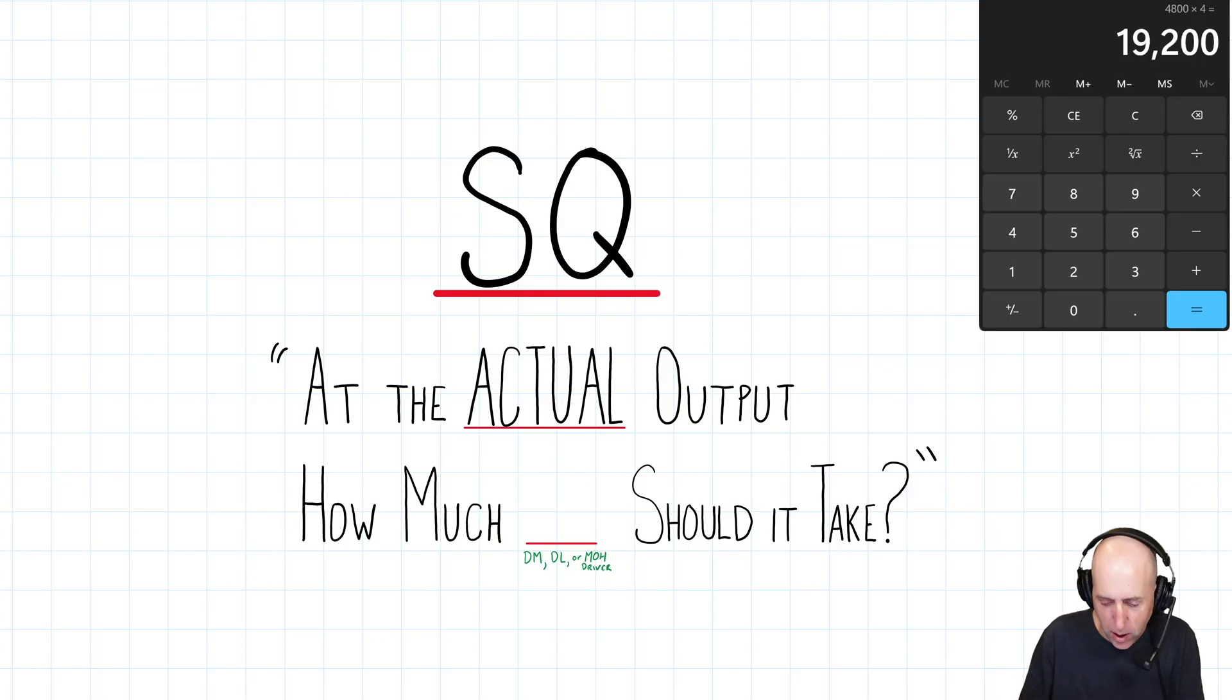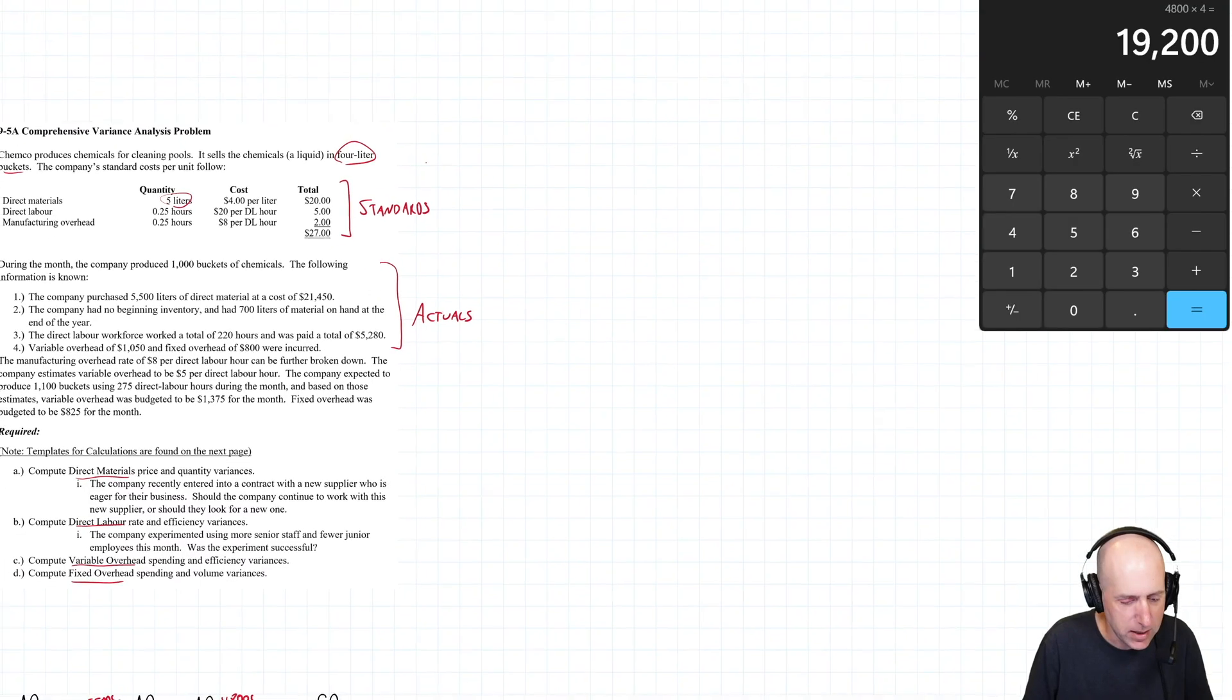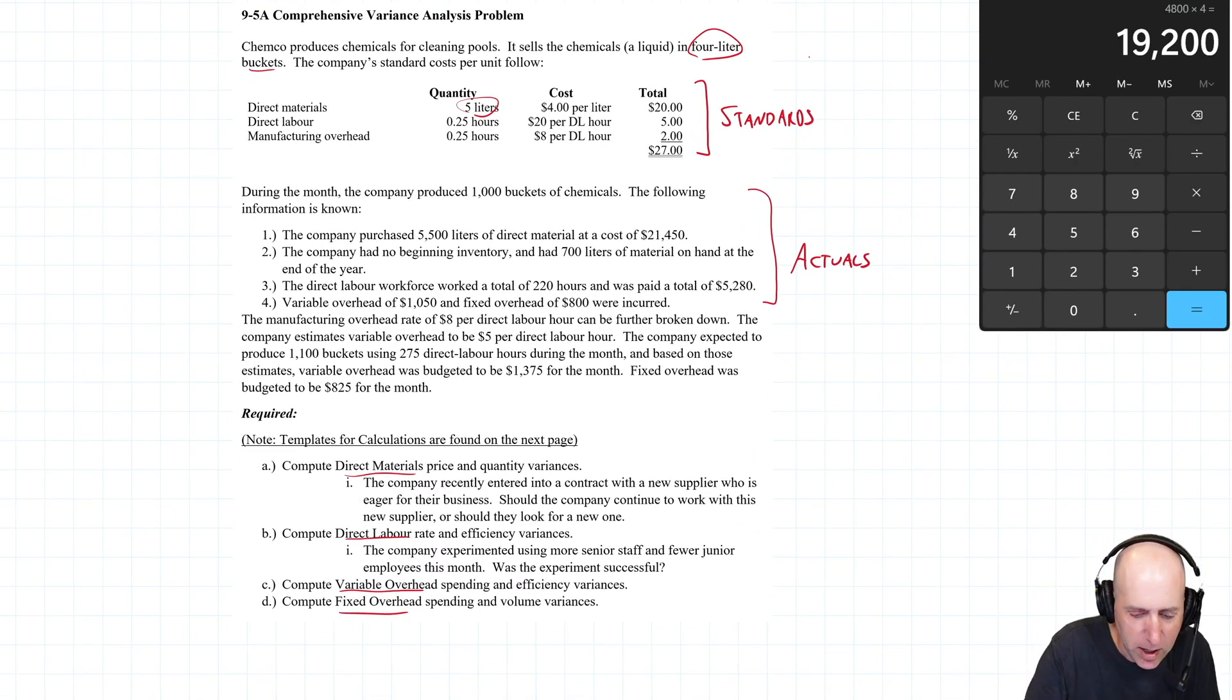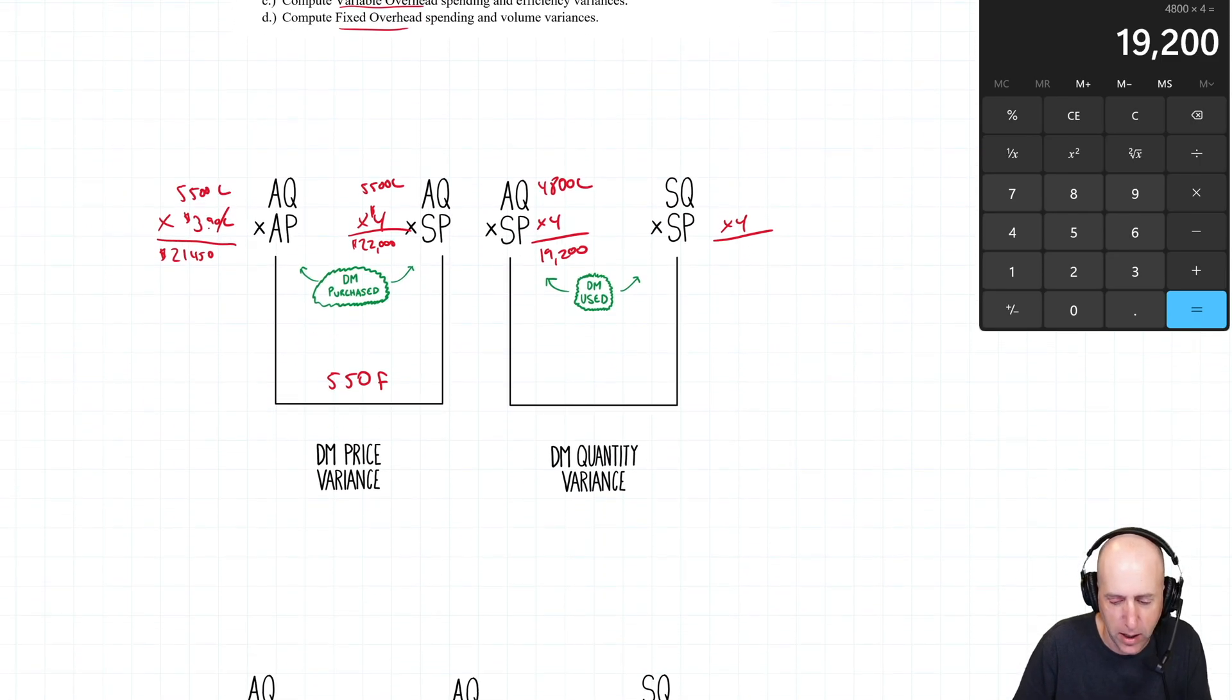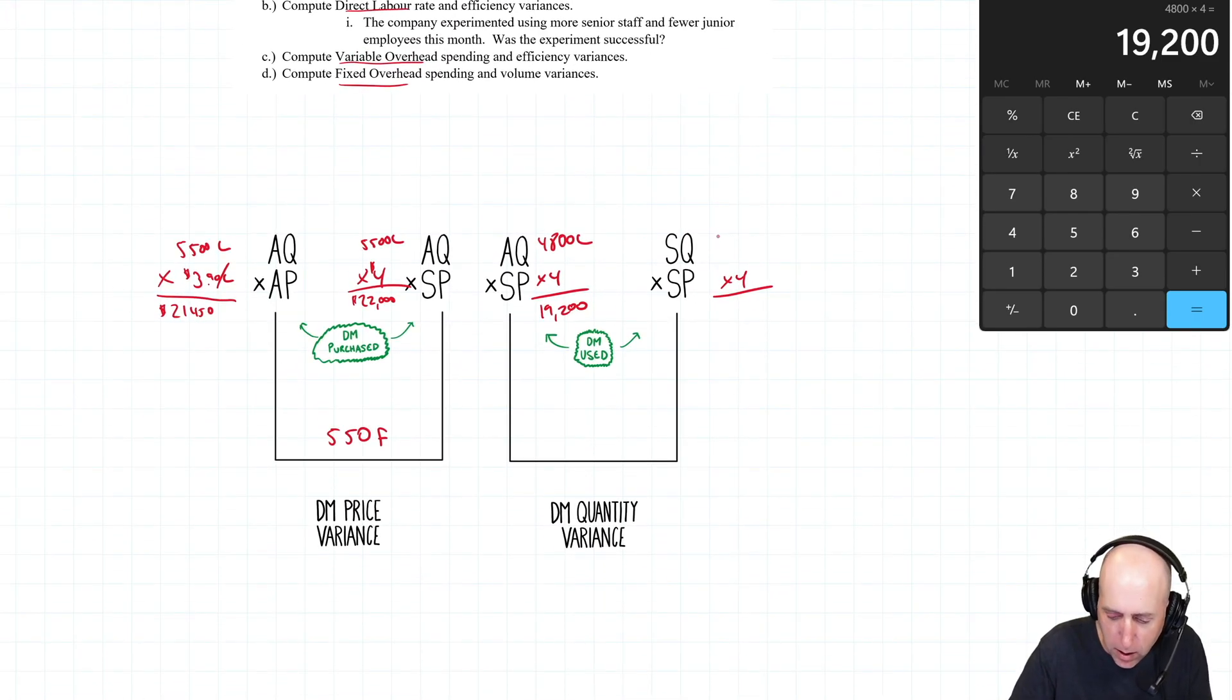Working over to SQSP, SP is still 4. What we have to do for SQ, and you've seen this phrase before, given the actual output, given the number of good units I made, how much material should it have taken? We made 1,000 buckets of chemicals, and it's supposed to take 5 liters per bucket, so it should have taken 5,000 liters. So that's my SQ. 5,000 times 4 is $20,000 worth of chemicals.